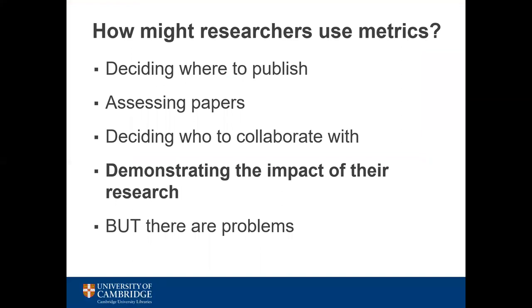Researchers might use metrics to decide where to publish, to determine what journals are good quality or which have a high profile. They may use metrics to assess the quality of a paper, often because of the journal it has been published in, or to decide who to collaborate with. The main use for metrics has traditionally been to demonstrate the impact of their research to potential funders and collaborators and to their institution when applying for promotion.